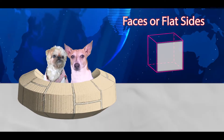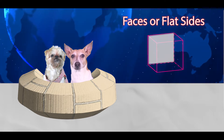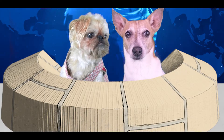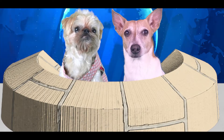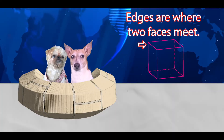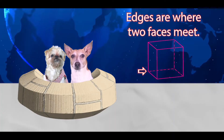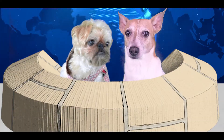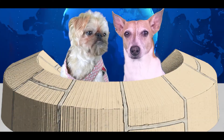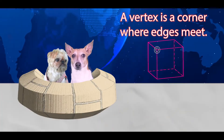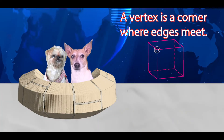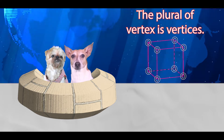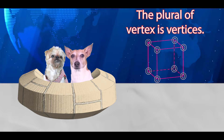This cube has six faces or flat sides. I know some people that have two faces. Speaking of two faces, edges are where two faces meet. Last but not least, a vertex is a corner where edges meet. The plural of vertex is vertices.